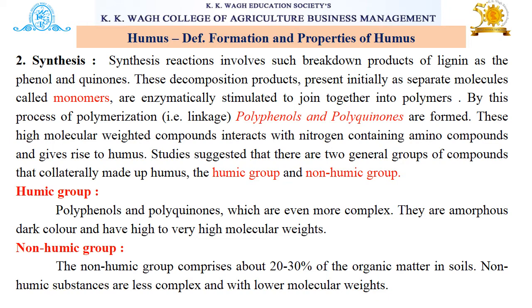Studies suggest that there are two general groups of compounds that collectively make up humus: the humic group and the non-humic group. The humic group consists of polyphenols which are even more complex, amorphous, dark colored, and have high to very high molecular weights. The non-humic group comprises about 20 to 30 percent of organic matter in soils, and non-humic substances are less complex with lower molecular weights.